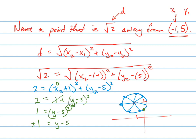See how there are two points? One here and one there. It doesn't matter which one we pick, but we have two answers. So y equals 5 plus or minus 1. We actually found two points: 5 plus 1 is 6, and 5 minus 1 is 4.